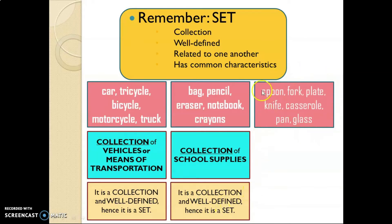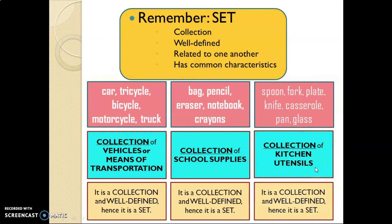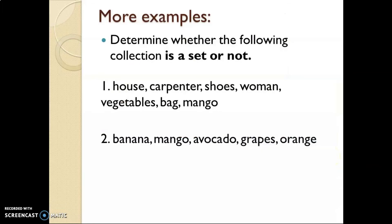We have a third group of objects: spoon, fork, plate, knife, casserole, pan, and glass. It is a collection, and can you identify what collection of objects this is? It is a collection of kitchen utensils. Since it is a collection and well-defined, we can say therefore that this is a set. That is how to identify whether a collection is a set or not — if you can identify the common characteristics or relationship among the objects, then that collection is a set.